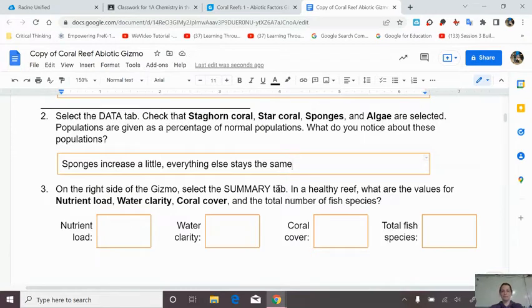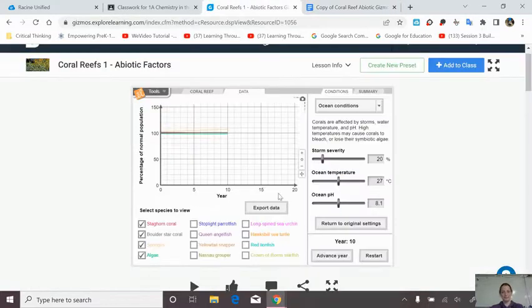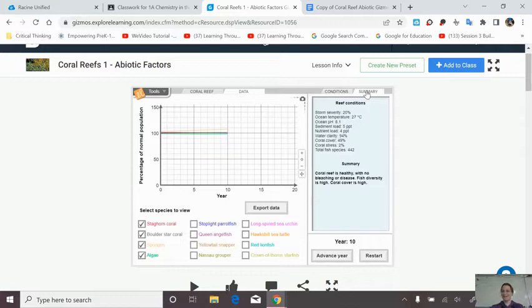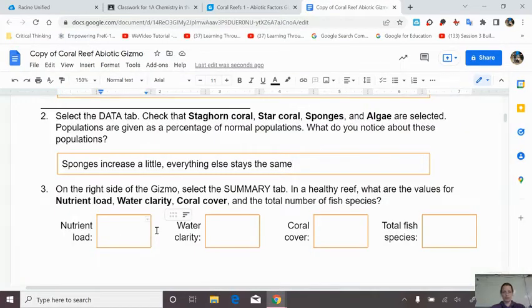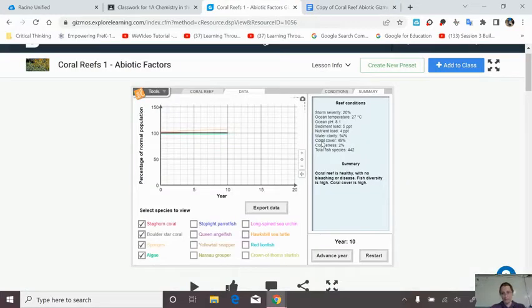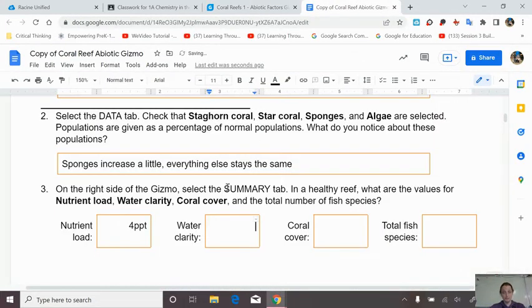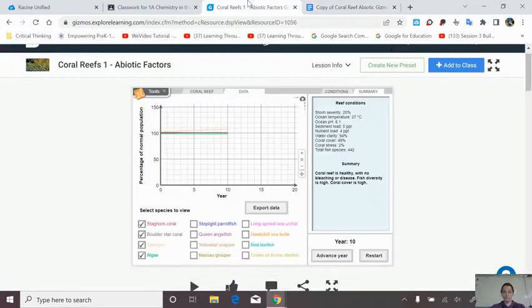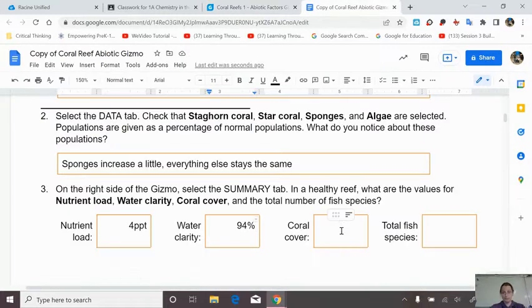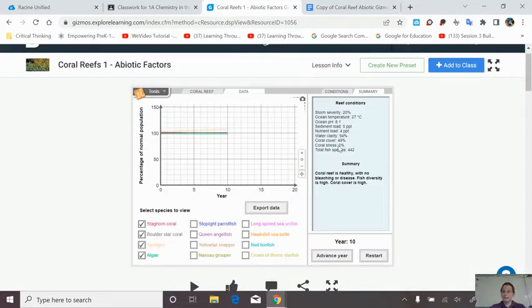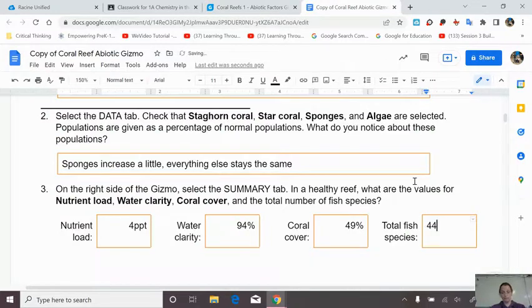We're going to do staghorn, star, sponges, algae. There we go. We're going to advance again. If you look at it, they mostly stay flat except for the one for sponges, which is the yellow line that goes up a little bit. So sponges increase a little. Everything else stays the same.